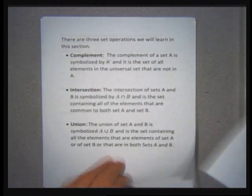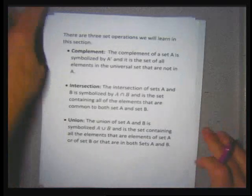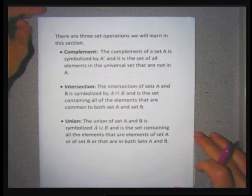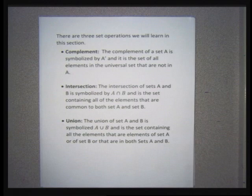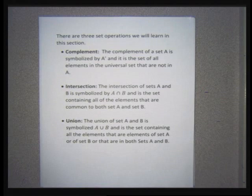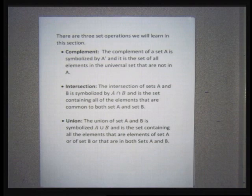When we work with two and three sets, if we want to join two sets together, we don't have standard operations like we have with numbers. With numbers, we can add, subtract, multiply, and divide. With sets, you can't really add, subtract, multiply, or divide sets. With sets, we have operations to combine two sets to get another set, and there are three main set operations.